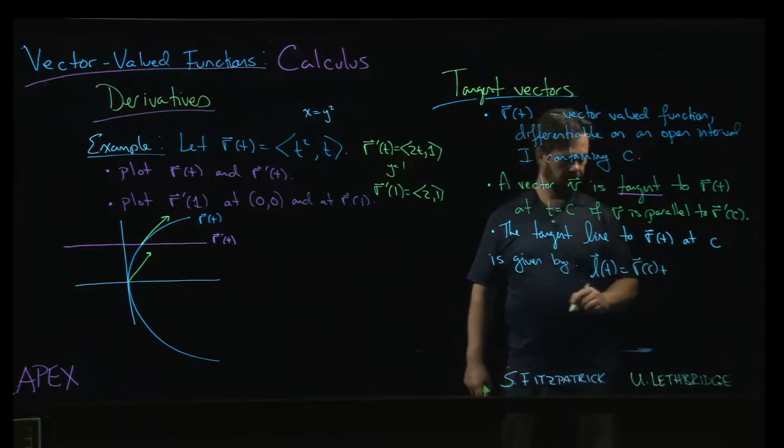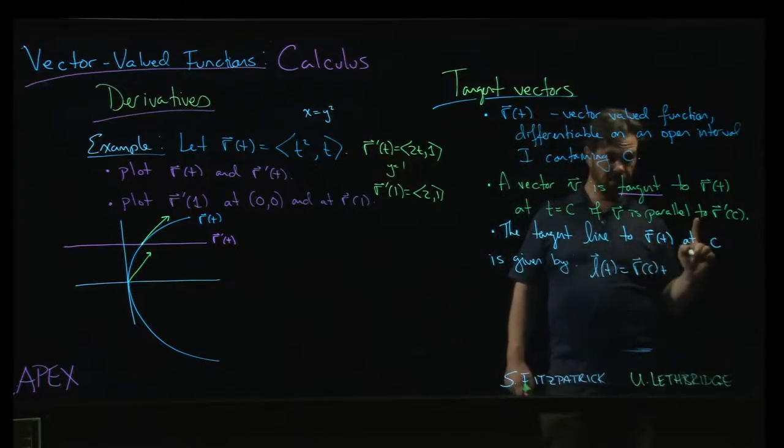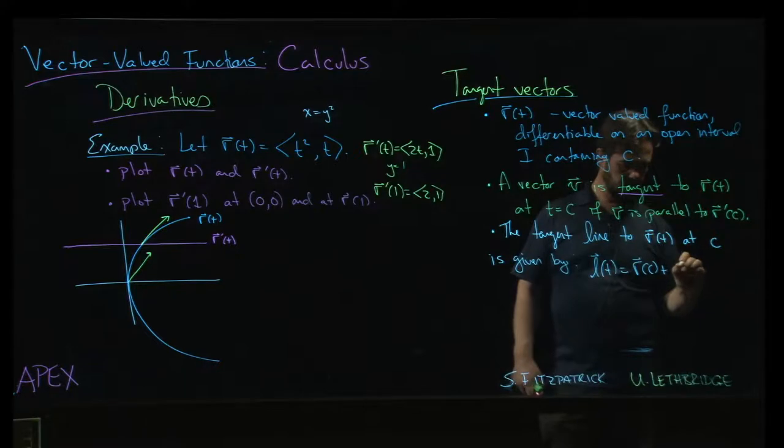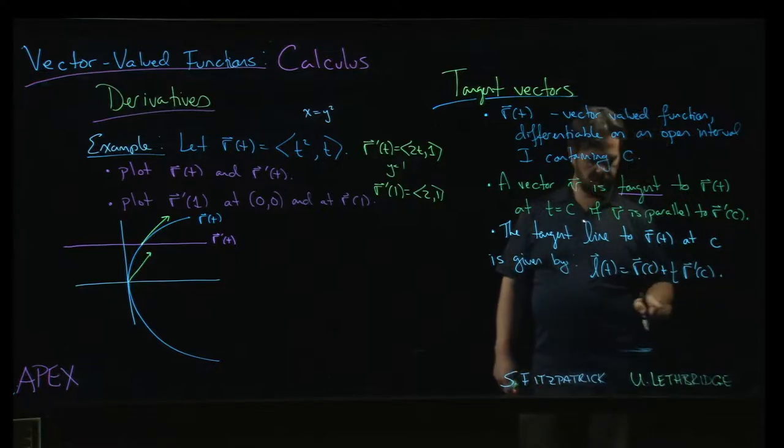Well, we need a point on the line, but that's given by simply r(c), right? And then we need a direction vector for the line, but that's the tangent vector. We need a parameter r prime of c, and then we put in t.